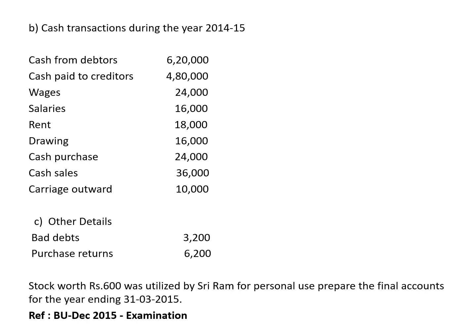Cash transactions during 2014-15: cash received from debtors 6,20,000 — goes to cash account and debtors account. Cash paid to creditors 4,80,000 — goes to creditors account and cash account. Wages 24,000 — direct expenditure, goes to trading account and cash account. Salaries 16,000 — goes to cash account and P&L account. Rent 18,000 — goes to cash account and P&L account.